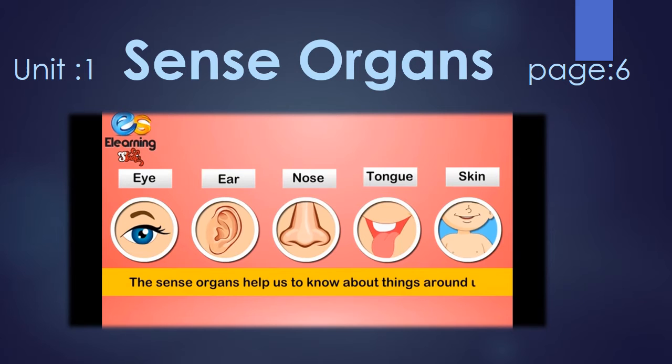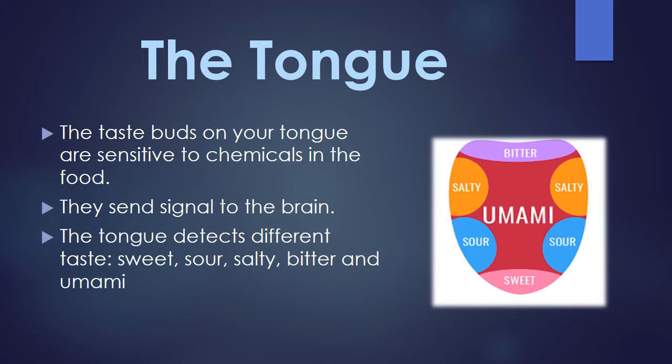I am going to start with unit number 1, sense organs. First I will tell you about the human tongue. The taste buds on your tongue are sensitive to chemicals in the food. They send signals to the brain, and the tongue detects different tastes like sweet, sour, salty, bitter, and umami. So basically the main function of the tongue is to taste different sorts of taste.